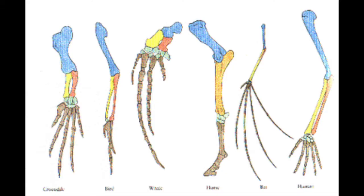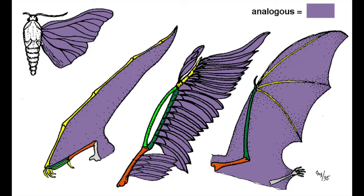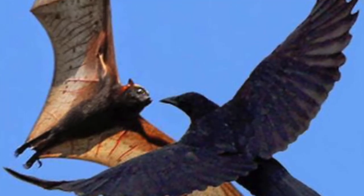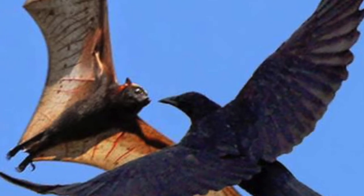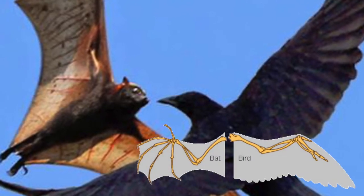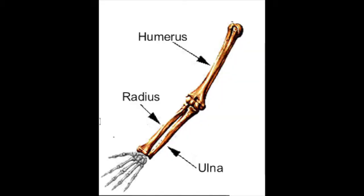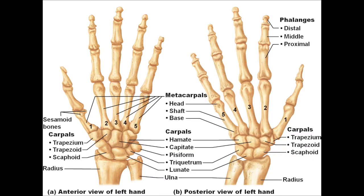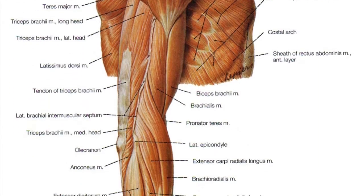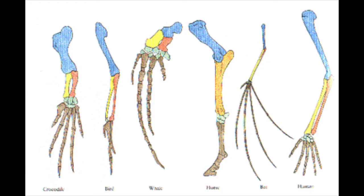The pentadactyl limb is a hand or foot that has five digits. Interestingly, though bird and bat wings are analogous as wings, as four limbs they are homologous. Birds and bats did not inherit wings from a common ancestor, but they did inherit four limbs from a common ancestor with four limbs. The human pentadactyl limb, or arm, is composed of 30 bones and is specialized to reach and grab. You are going to draw conclusions from evidence about the pentadactyl limbs and tetrapods to support the theory of evolution.